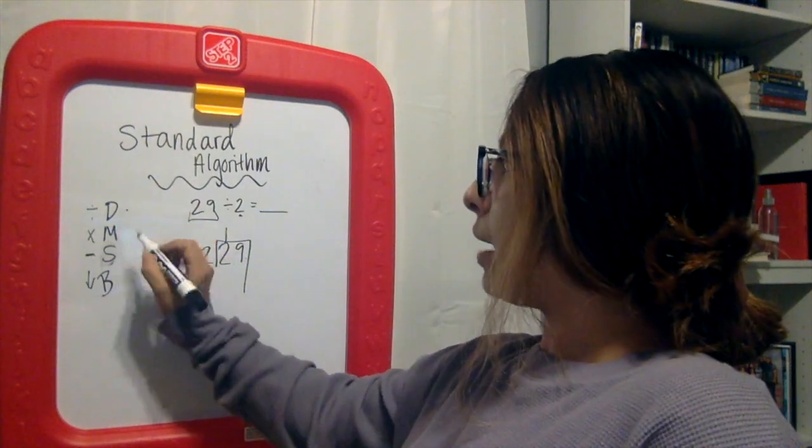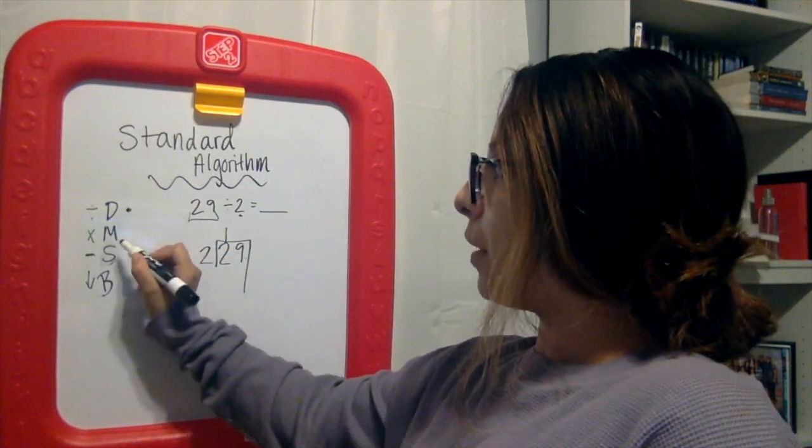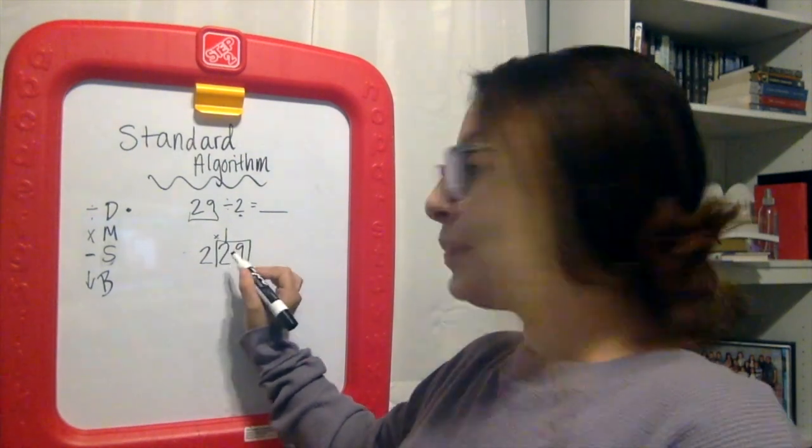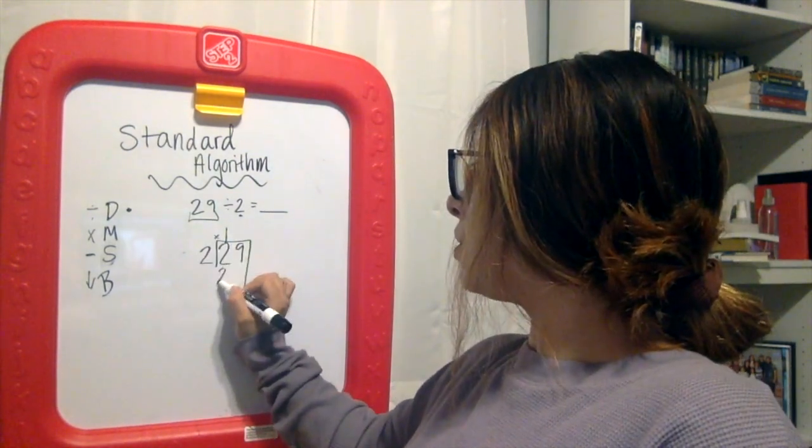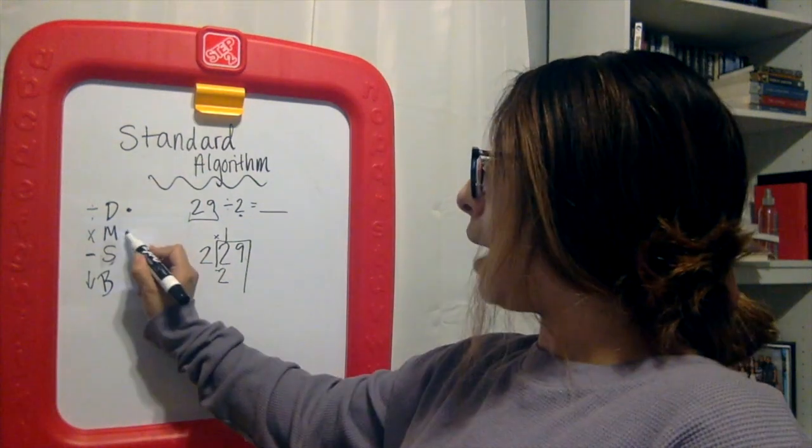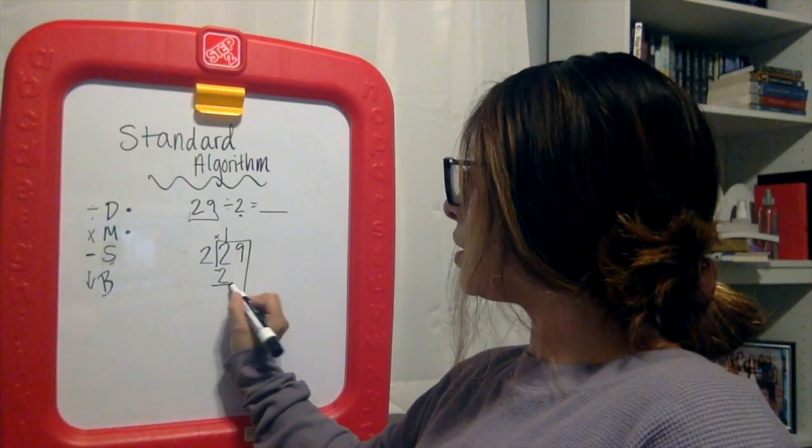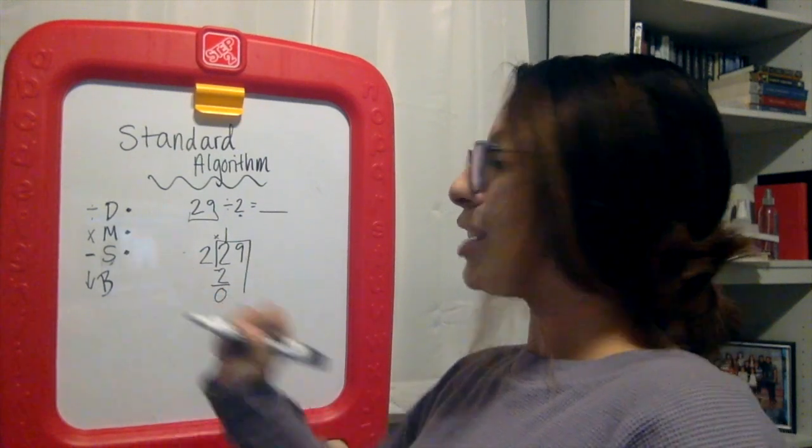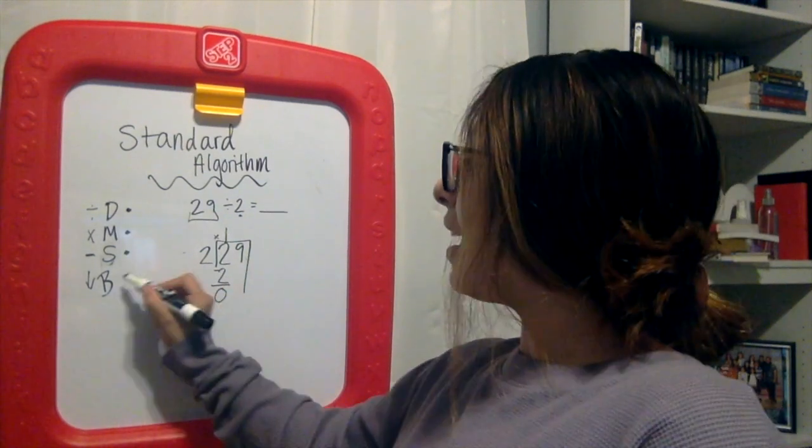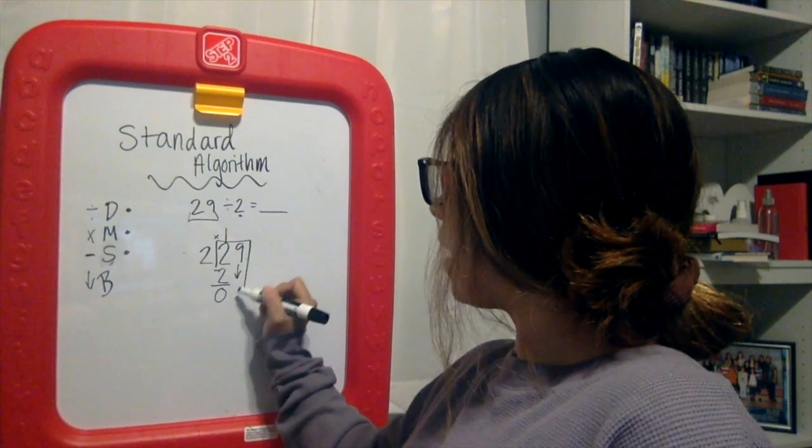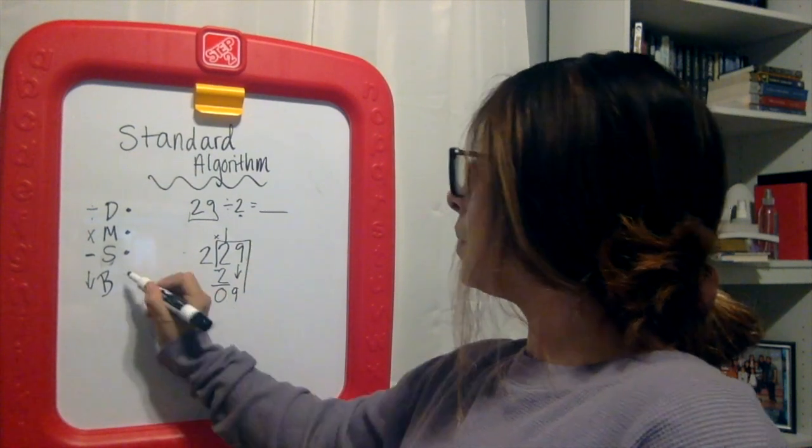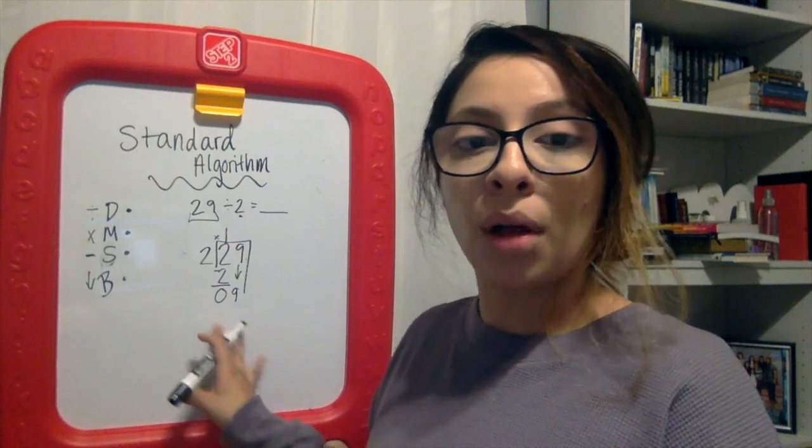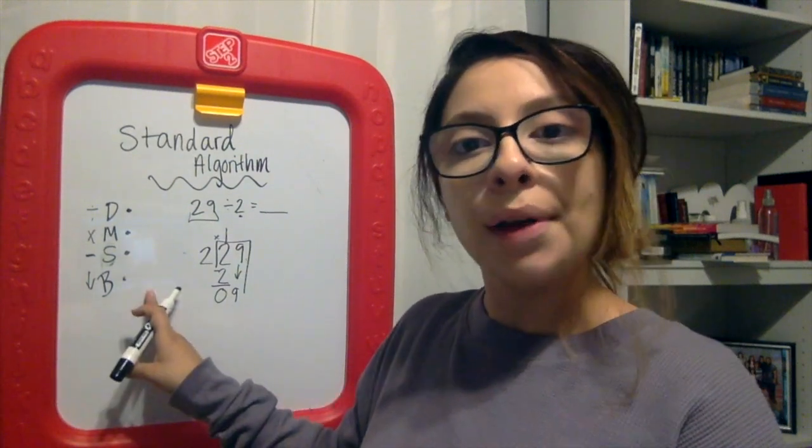Our multiplication is next. I like to put a little dot and then go to my next one. I like to use the corner as a little multiplication symbol. 2 times 1 is 2. Now after we multiply, we subtract. So there's my subtraction sign. 2 take away 2 is 0. After my subtraction, I put a little dot. And then B is for bring down, so I'm bringing down my 9.